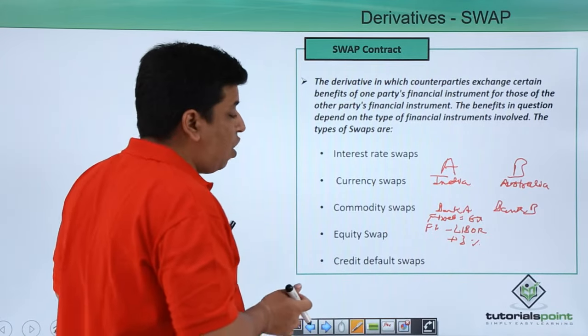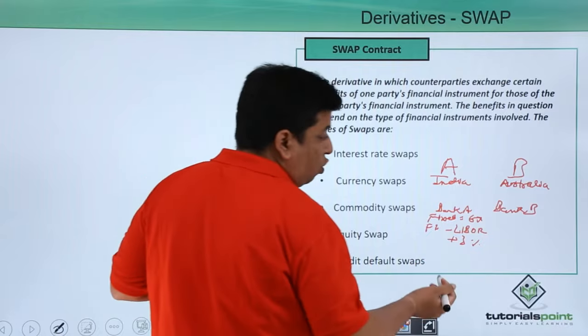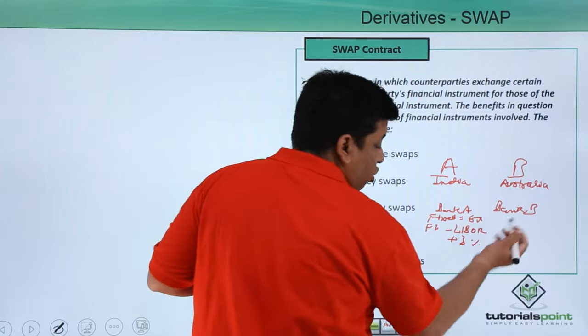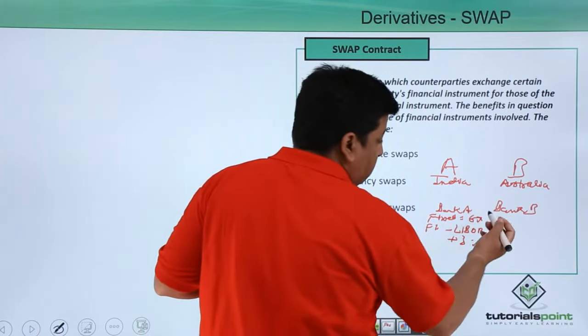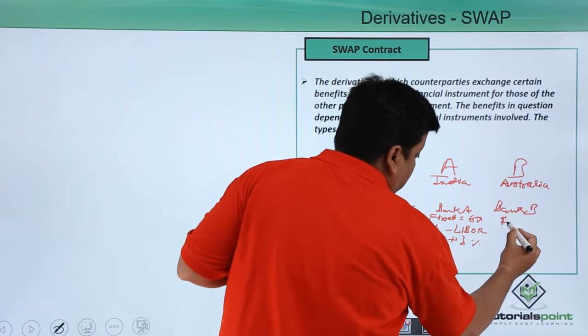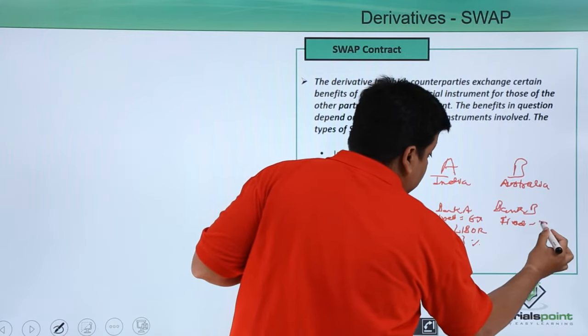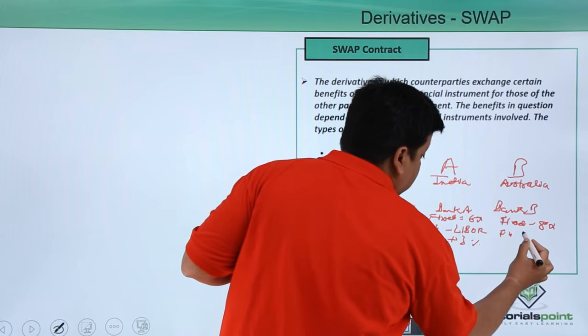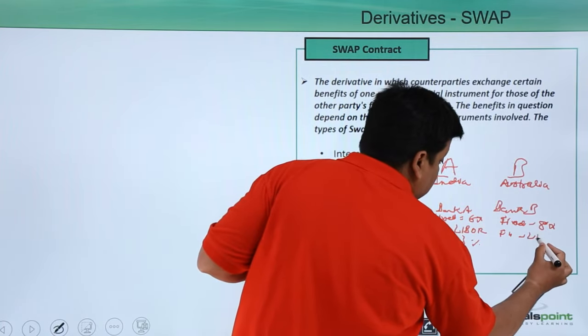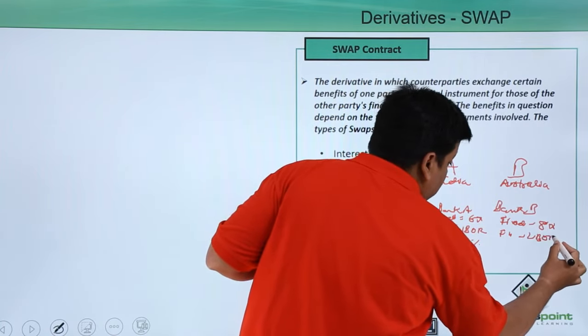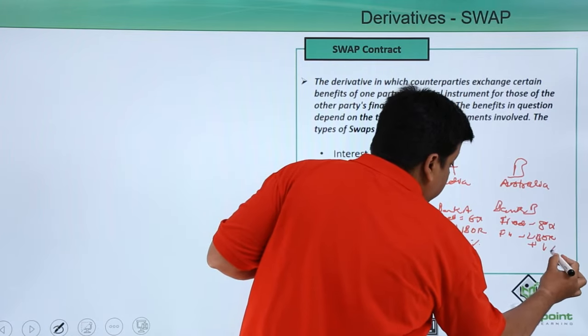In case of bank B, they are also willing to give loan to company B at a fixed of 8% and a floating of LIBOR plus 1%.